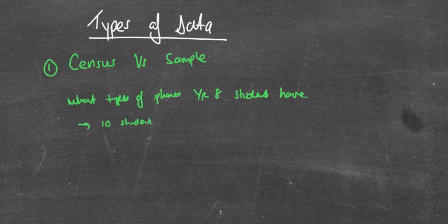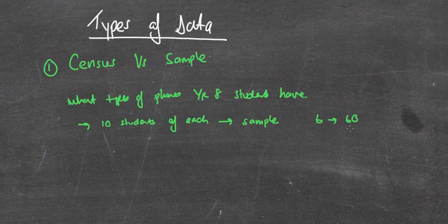What we would say that would be a sample because it gives a representation of ten students from each class. So let's say there's six classes, that would give you 60 students across the board of 180 students. So it's a representation of the whole population but only a small portion of it.